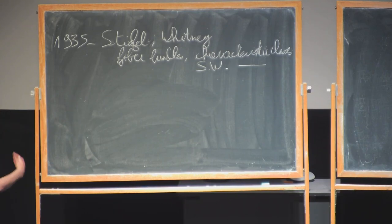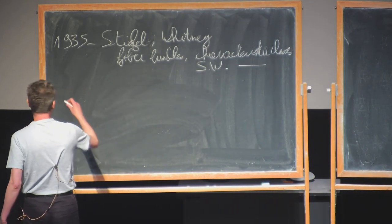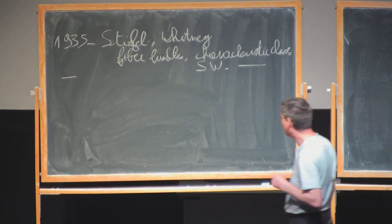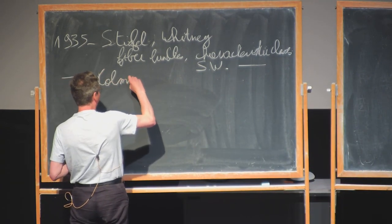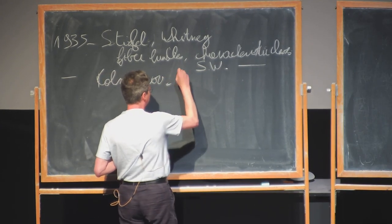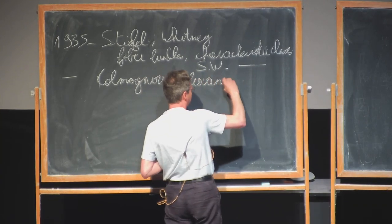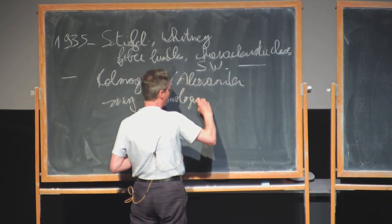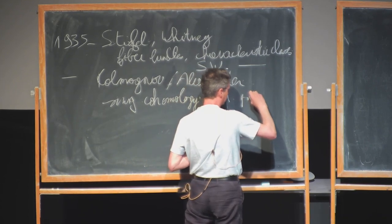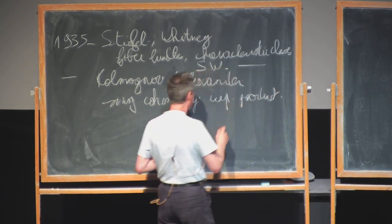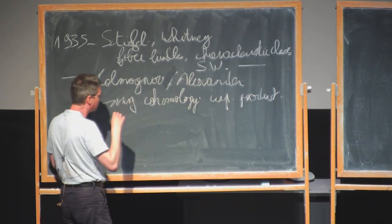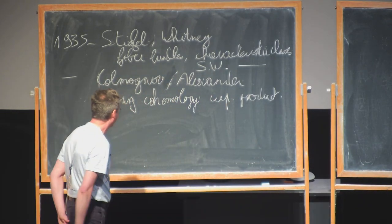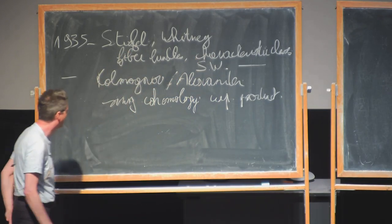Characteristic classes live in cohomology — we know that now. In that same year, there was an international conference in Moscow on algebraic topology where Kolmogorov and Alexander independently introduced cohomology theory, meaning singular cohomology as we know it now, and also the cup product. The cup product name came from Whitney slightly after, in 1937. It was then realized that characteristic classes are really cohomology classes.